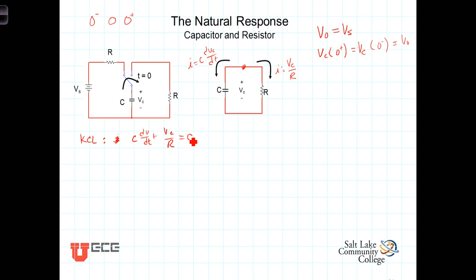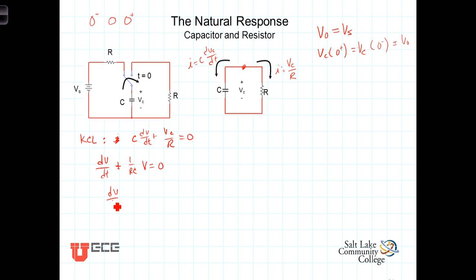Now, let's do a little cleaning up. We'll divide both sides of the equation by C, so that we end up with dV/dt plus 1 over RC times V is equal to zero. Subtracting the second term from both sides gives us dV/dt is equal to negative 1 over RC times V.